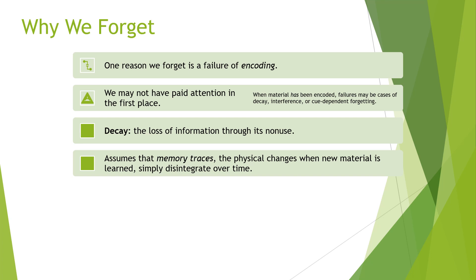When material has been encoded, failures may be cases of decay, interference, or cue-dependent forgetting. Decay is the loss of information over a period of time — if you're not using that information, over time you're going to be less likely to remember it. Decay assumes that memory traces, which are the physical changes that occur when new material is learned, simply disintegrate over time.